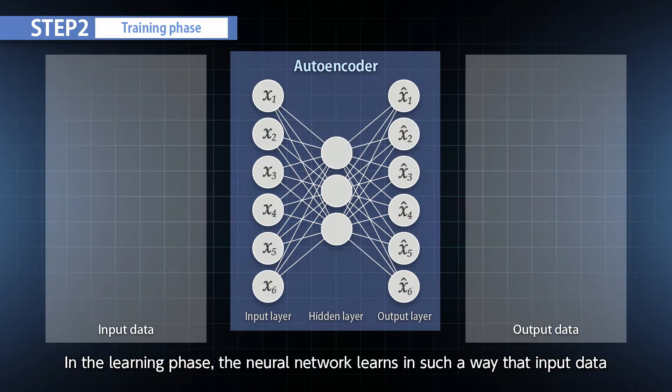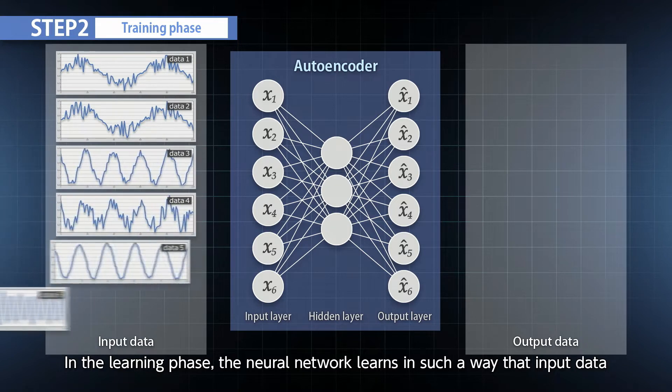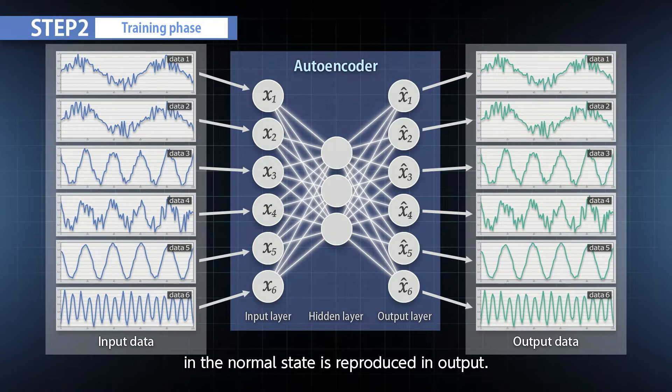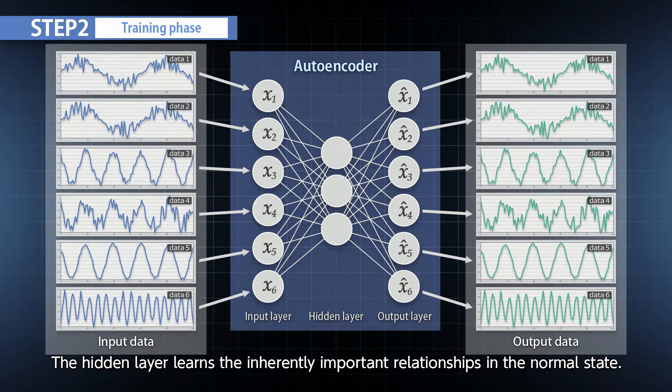In the learning phase, the neural network learns in such a way that input data in the normal state is reproduced in output. The hidden layer learns the inherently important relationships in the normal state.